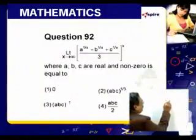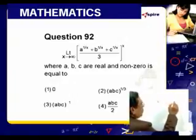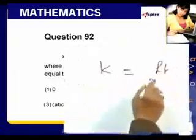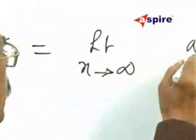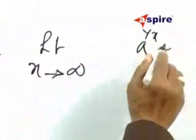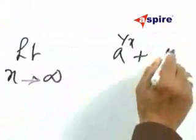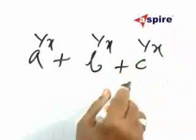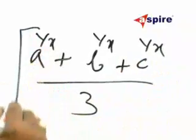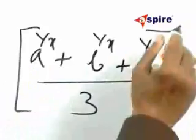Let K be equal to limit X tends to infinity: A to the power 1 by X plus B to the power 1 by X plus C to the power 1 by X, the whole thing divided by 3 to the power of X.